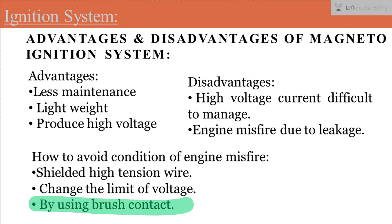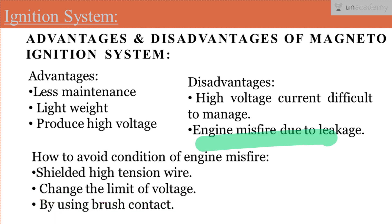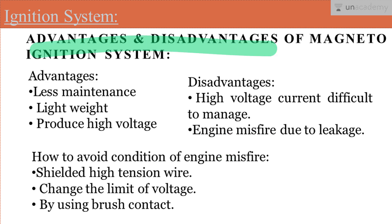If we use brush contact in place of the distributor, this will also help to avoid the engine misfire condition. These solutions help to limit the high voltage current in the system and avoid engine misfire. So these are some of the disadvantages and advantages of the magneto ignition system.